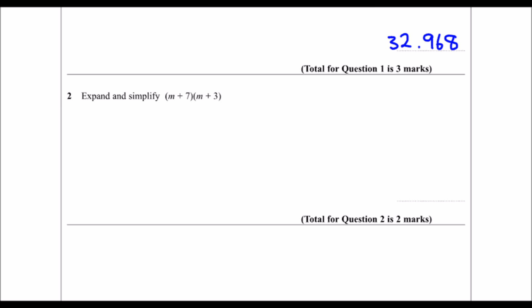Question 2 says expand and simplify, so that means we multiply the m by both terms in the second bracket, and the 7 by both terms in the second bracket. That's expanding, and then I'll simplify after by collecting the like terms.